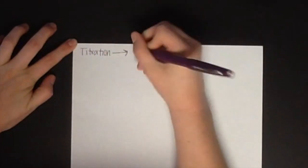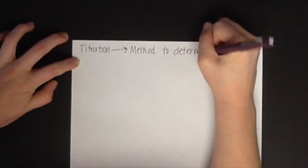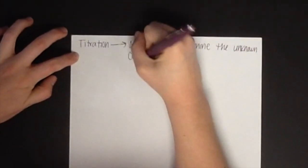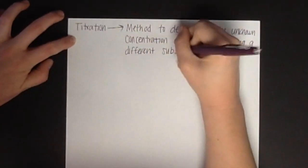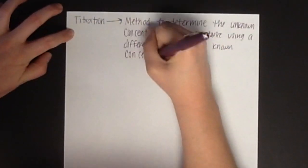A titration is a method to determine the unknown concentration of a substance using a different substance of known concentration. There are many types of titrations, but today we will be performing a redox titration.